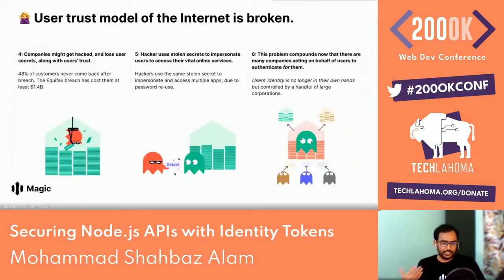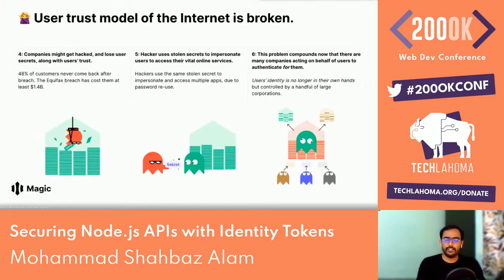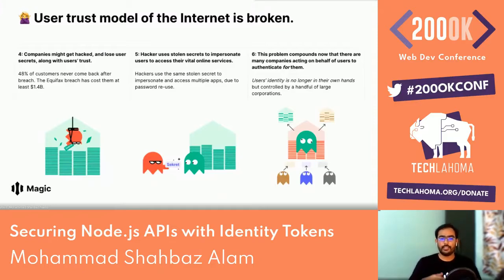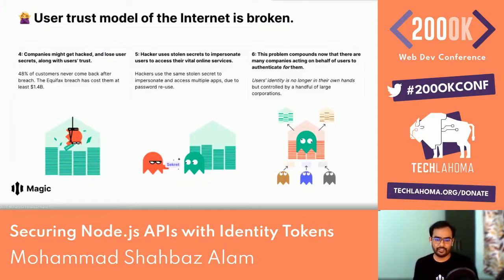Users access a company's secrets by literally showing the secret — consider it like writing them on a piece of paper and handing them to the app owner. Each time that happens, there's a risk of exposing sensitive data to hackers. Companies might get hacked — and it has happened in the past. The Equifax breach cost them at least $1.4 billion.